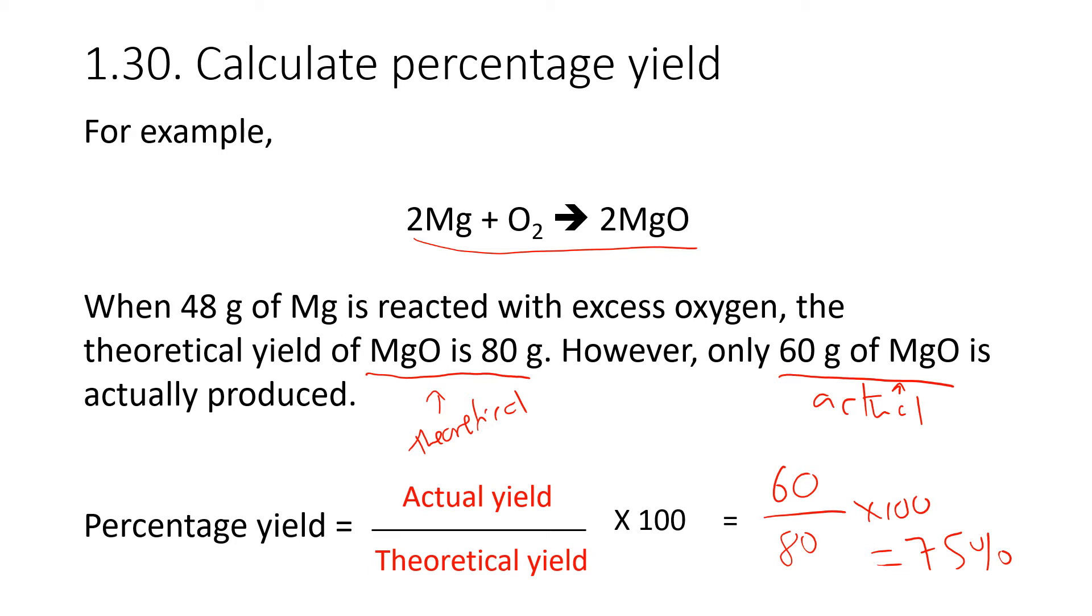And you could do that whether or not the theoretical yield is 100 or not. If it was, for example, a 50 mark paper, then say you scored 25, you'd have 25 over 50 times by 100. What you actually got divided by what you could have got times by 100. That's the same with percentage yields in chemistry.